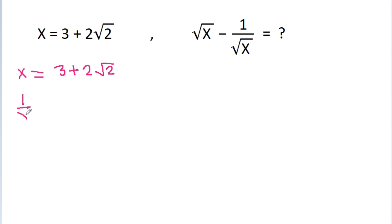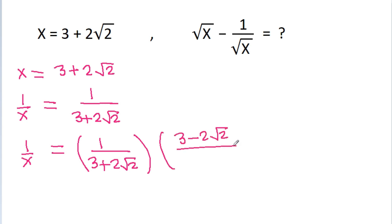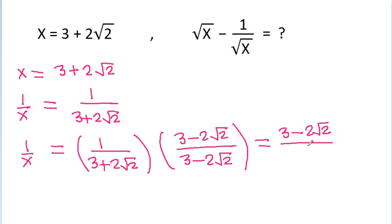1 by x will be equal to 1 by 3 plus 2 root 2. If we multiply it with 3 minus 2 root 2 by 3 minus 2 root 2, then using the identity a plus b times a minus b equals a squared minus b squared, 3 squared is 9 minus 2 root 2 squared is 8, so 1 by x equals 3 minus 2 root 2.